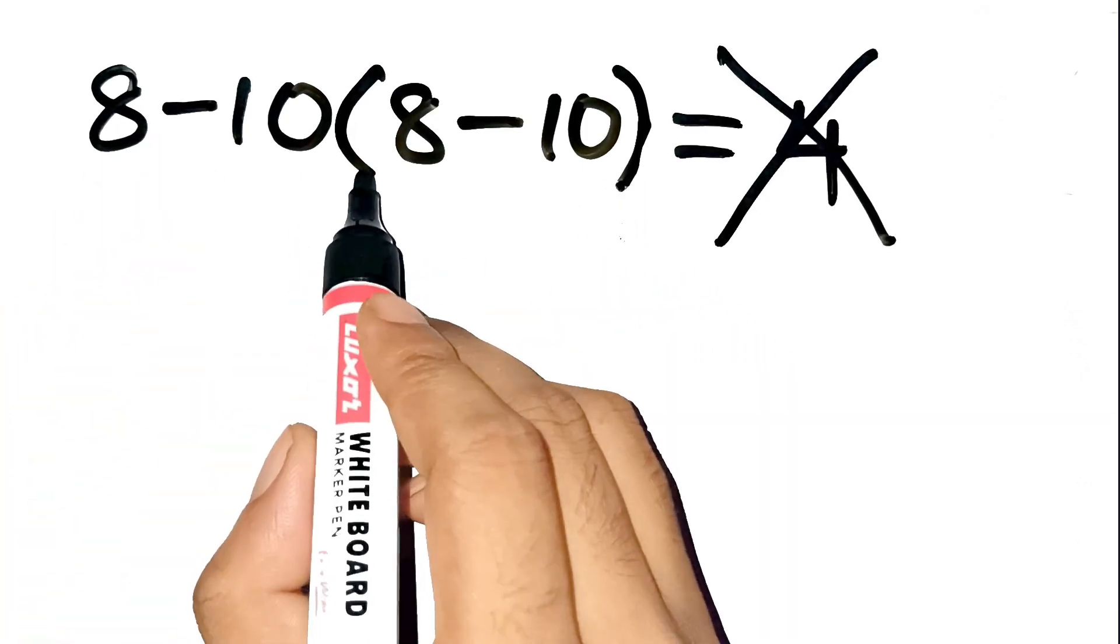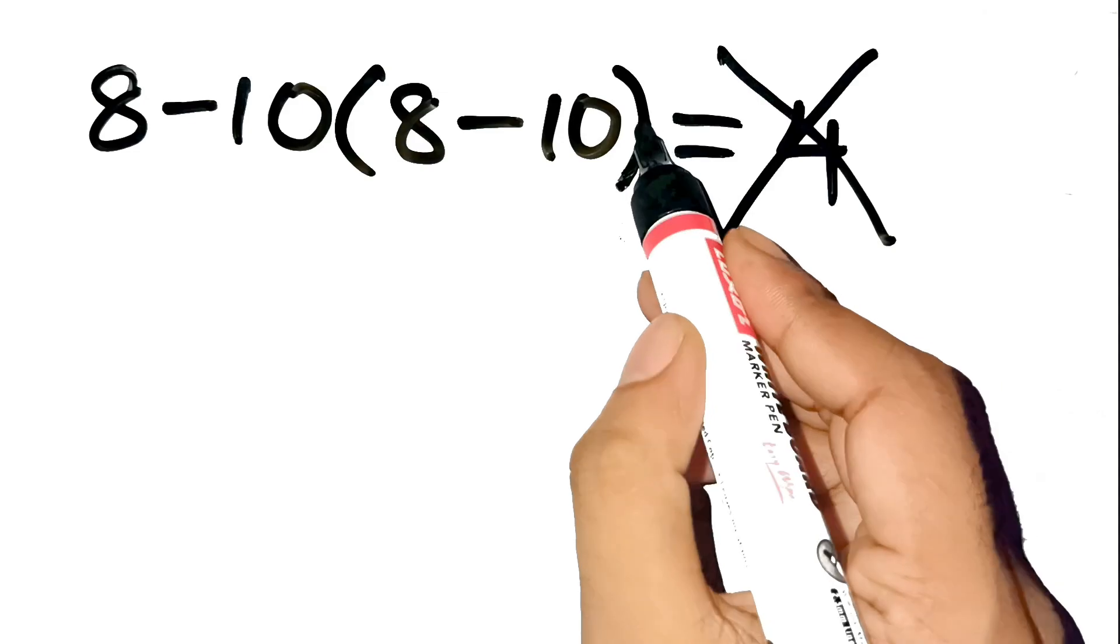Most people look at this and think it's obvious. The problem is 8 minus 10, open parentheses, 8 minus 10, close parentheses, right?